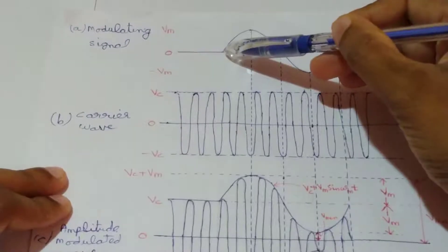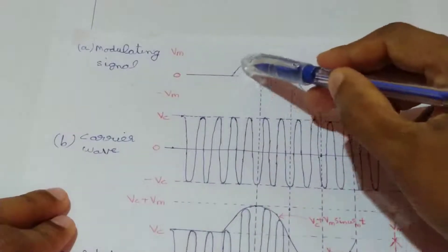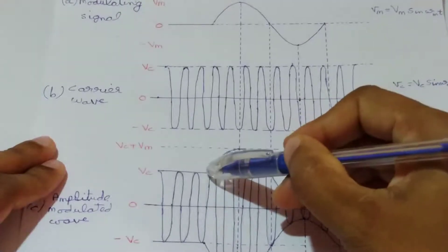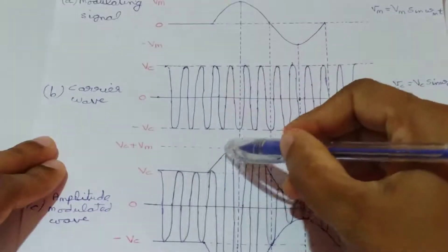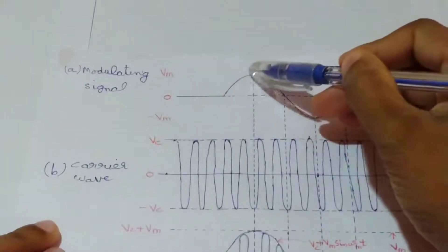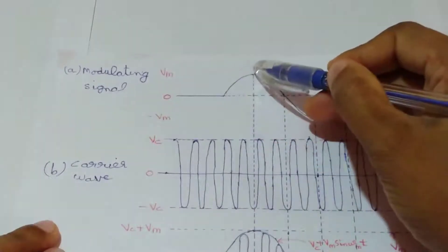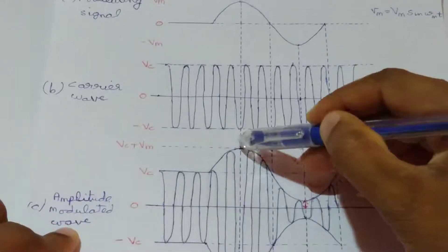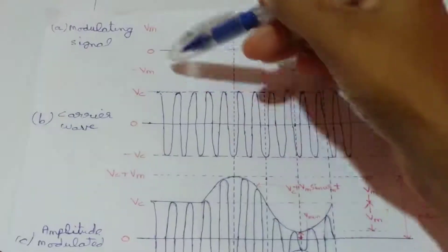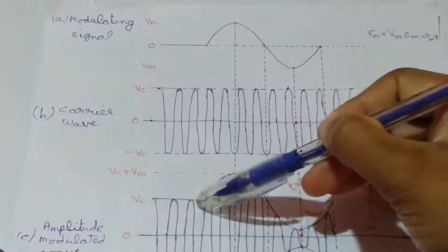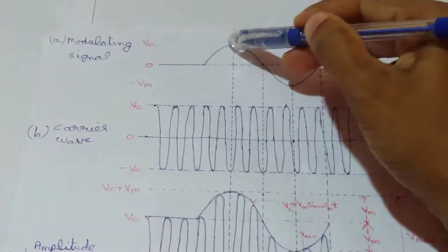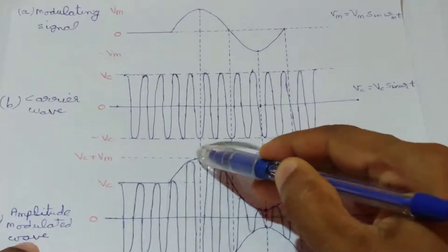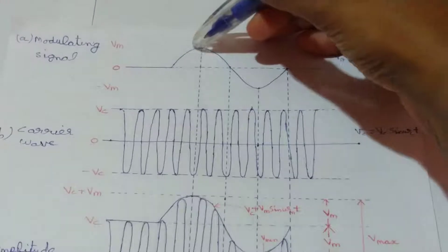Our amplitude modulated wave looks like this. Up to the point where the modulating signal is applied, the signal is at zero level, represented by Vc amplitude — the peak amplitude of the carrier signal. From that point, the modulating input signal begins increasing, and accordingly the amplitude of the carrier signal increases from Vc. When the modulating signal amplitude reaches Vm, the amplitude modulated wave also reaches its peak value of Vc plus Vm. After this, the modulating signal amplitude goes on decreasing, and hence the AM wave amplitude also decreases.